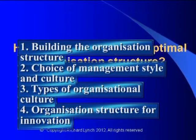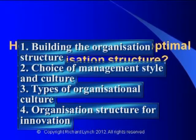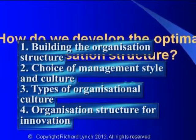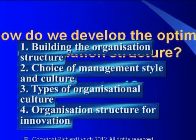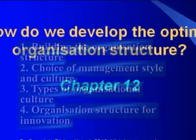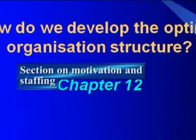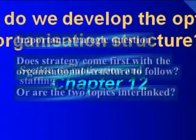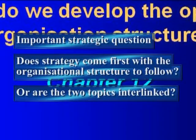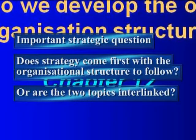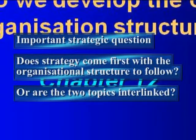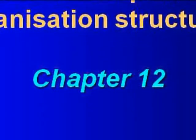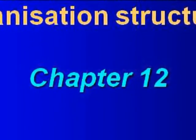Number two: choice of management style and culture. Number three: types of organisational culture. Number four: an organisation structure for innovation. The chapter then finishes with a section on motivation and staffing in strategy implementation. There's also a section at the beginning of the chapter on whether strategy is decided first and then organisational structure, or whether strategy and structure are interlinked, covered in section 12.1.